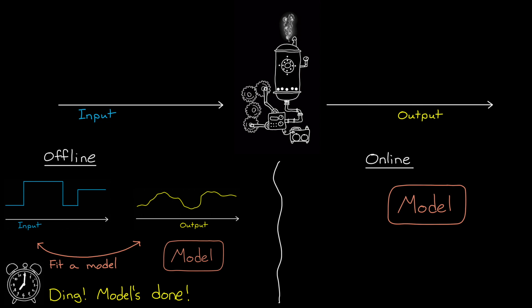Online system identification basically means that the algorithm is running during the operation of the physical system. These algorithms estimate the parameters and states of a model as new data is measured and available in real time or near real time.